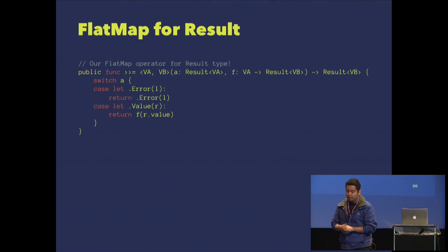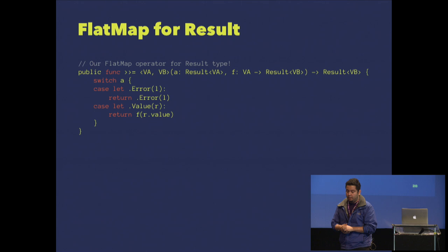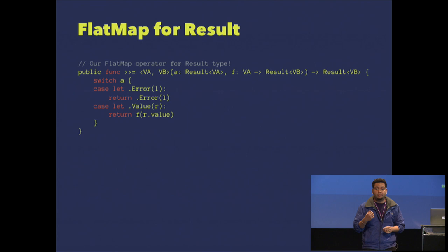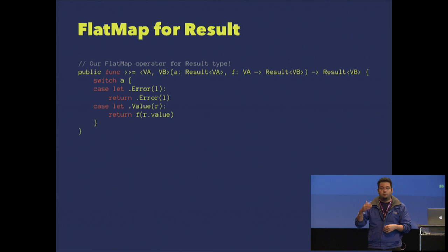Let's create a flat map for result. It's slightly different from the previous one because if we have an error, we pass that error along. It means that if I have 10 calls and in the middle I have an error, the error will go to the end of the chain.